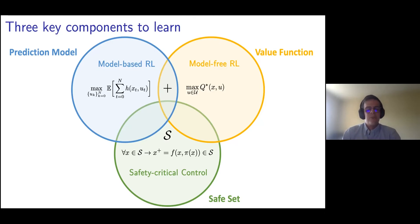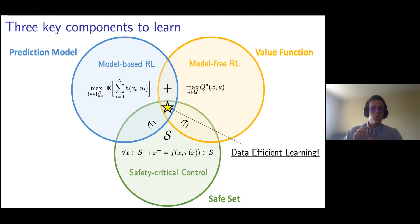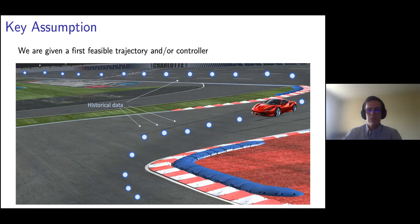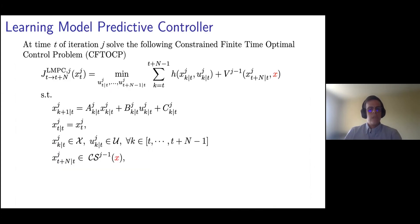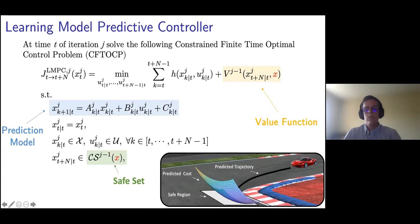The key message — and hopefully what I'm going to convince you of today — is that in order to have data-efficient learning that we can develop and deploy in the real world, we really need to operate at the intersection of these three circles. We're going to focus on our autonomous racing problem, where the goal is to minimize the lap time while satisfying state and input constraints. We make one key assumption: the first feasible trajectory able to execute the task is given, either from a human demonstrator or from a simple path-following controller tracking the center line at a low speed. Given this historical data, we initialize our recursion to synthesize control policies. At each time step, our controller plans a trajectory using the prediction model, the safe set, and the value function, solving a time-optimal control problem that plans a trajectory landing in a safe region and uses the value function to forecast the cost beyond our prediction horizon.